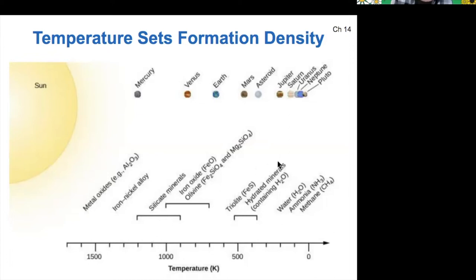And then things like hydrated minerals, ices containing water require lower temperatures in order to condense. And then finally, even lighter ices such as water, ammonia, and methane—those are some of the things that are in our outer worlds. Those require the coldest temperatures to be able to condense.